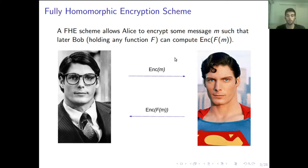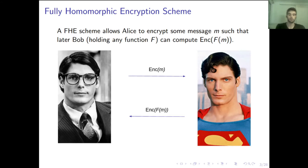This is very interesting in the setting where we have a weaker client that wants to outsource computations to a more powerful server. In the figure we have Laura Ken, who is supposed to be the weak client, and Superman, who is the more powerful server.